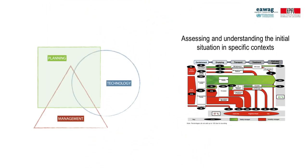Assessing and understanding the initial situation in specific contexts is especially important due to the heterogeneity of urban areas in low- and middle-income countries, characterized by rapid growth rates in very diverse landscapes in terms of income level, sanitation technologies, and formal and informal settlements, in addition to weak enabling environments.